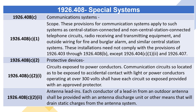1926.408(C)(2) — Protective Devices. 1926.408(C)(2)(i) — Circuits Exposed to Power Conductors. Communication circuits so located as to be exposed to accidental contact with light or power conductors operating at over 300 volts shall have each circuit so exposed provided with an approved protector. 1926.408(C)(2)(ii) — Antenna Lead-Ins. Each conductor of a lead-in from an outdoor antenna shall be provided with an antenna discharge unit or other means that will drain static charges from the antenna system.